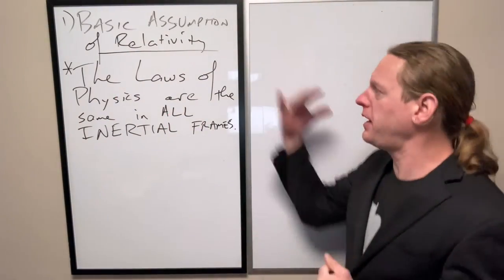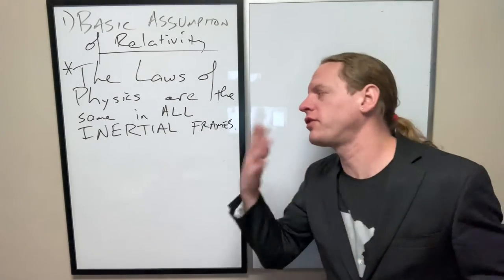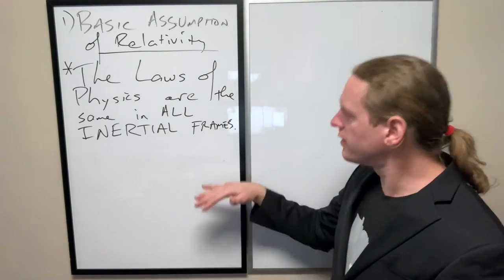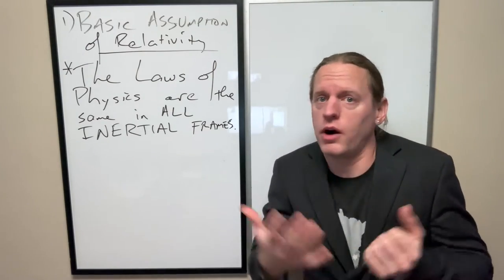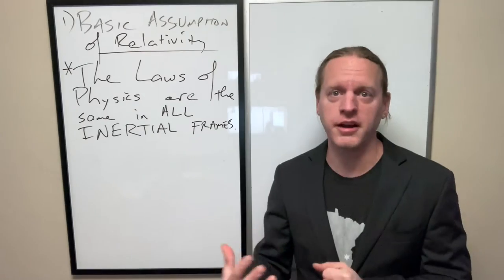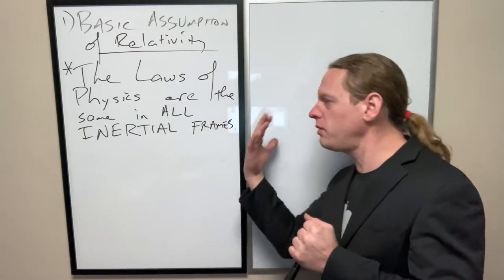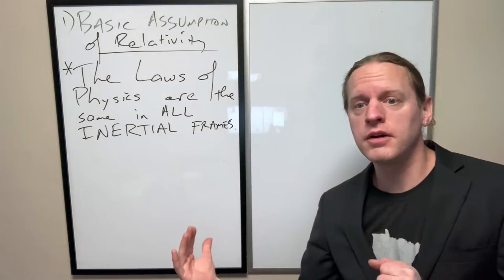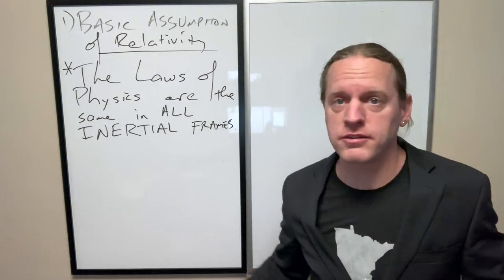To rephrase, the basic assumption of relativity is that the laws of physics should behave the same in all reference frames. More generally, if you can express something mathematically, it shouldn't matter what reference frame you're viewing the universe in - you should all agree mathematically on what the universe is doing.